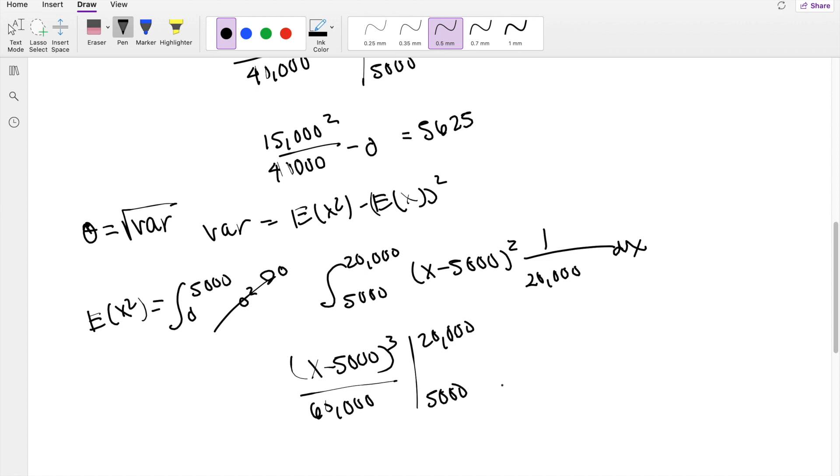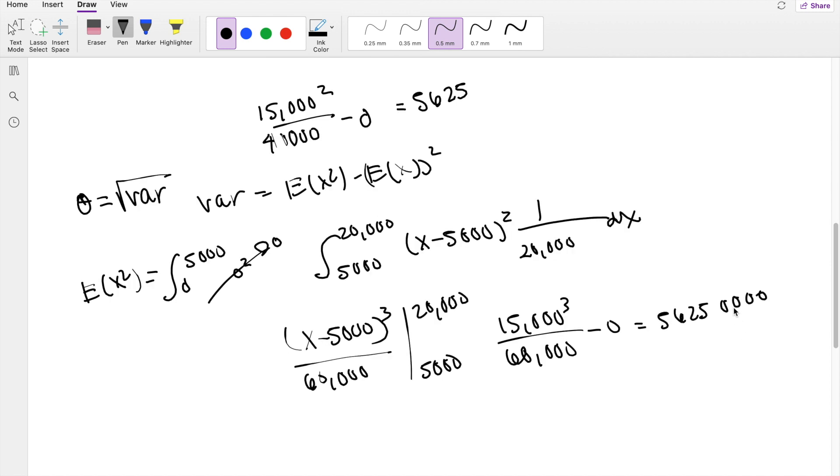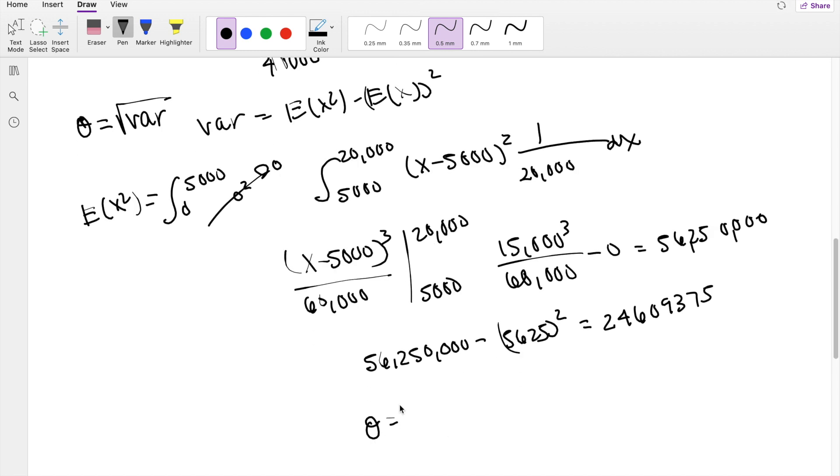Integrating this, you get X minus 5,000 cubed divided by 60,000, from 5,000 to 20,000. Plugging in the upper limit, you get 15,000 cubed divided by 60,000 minus the lower limit, which gives you 0. So this equals 56,250,000. Plugging back into our formula, you get 56,250,000 minus 5,625 squared, which equals 24,609,375. The square root is about 4,960.78.